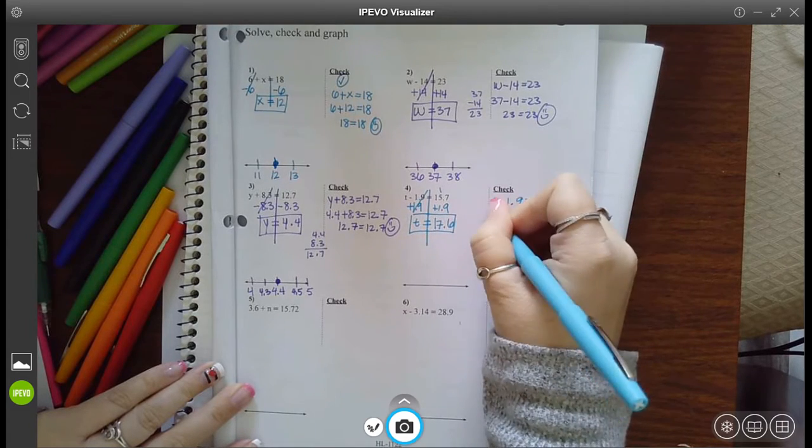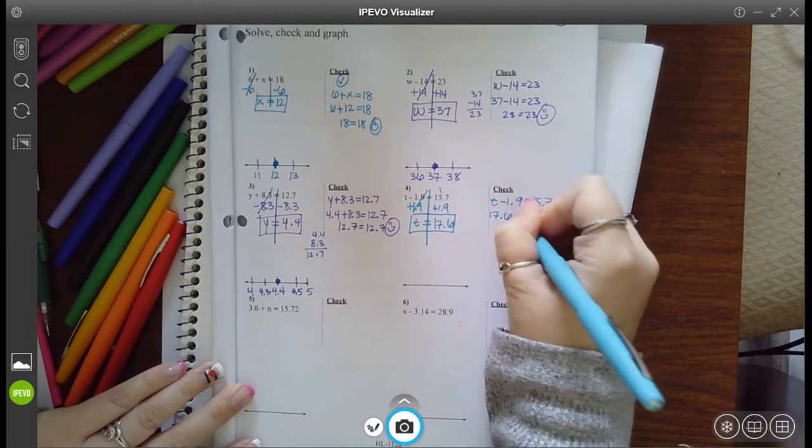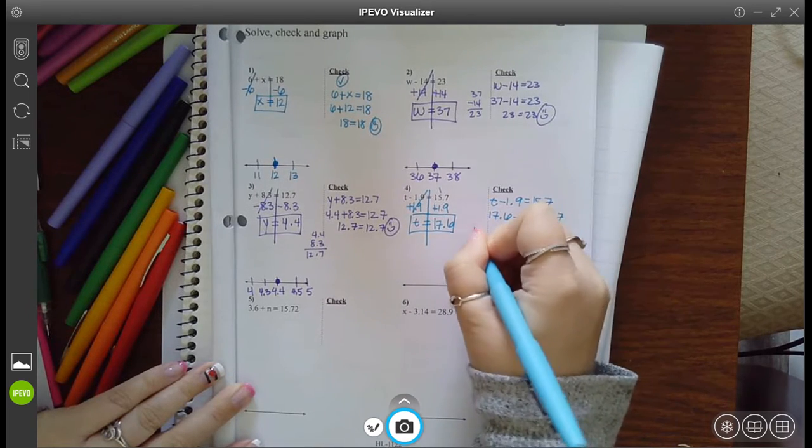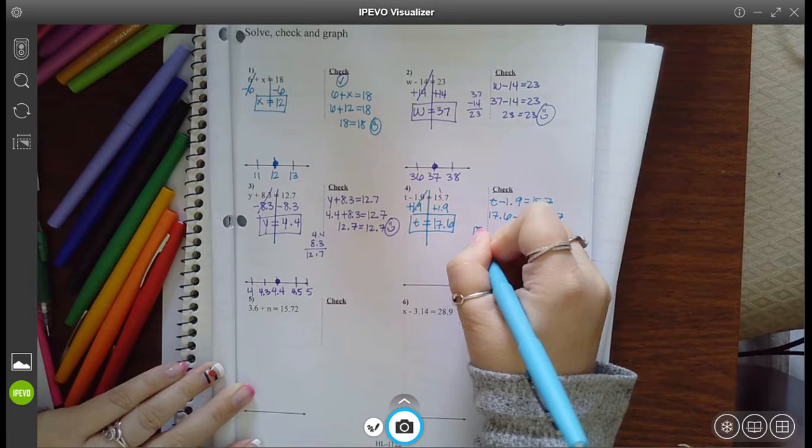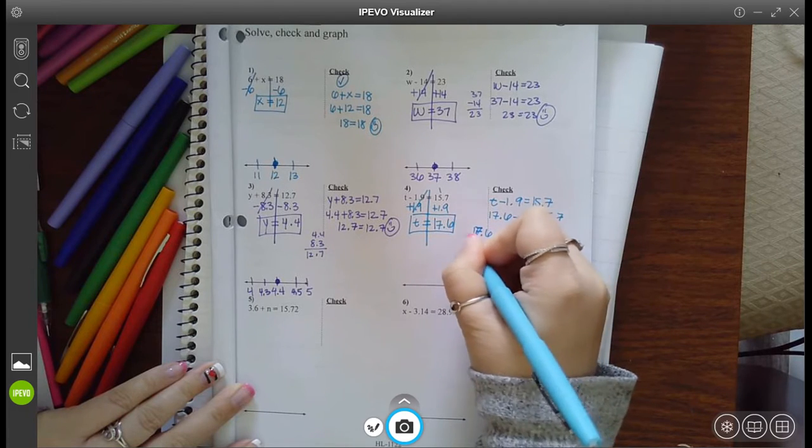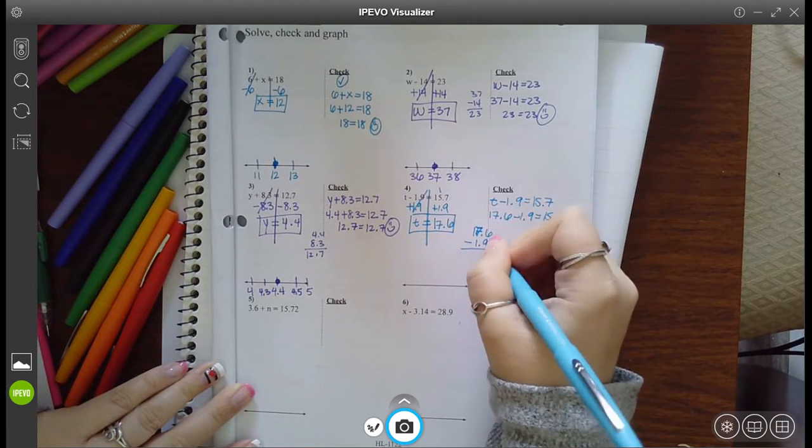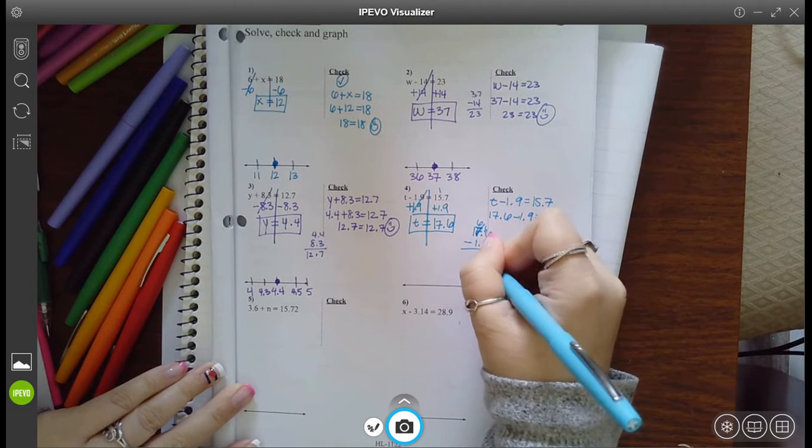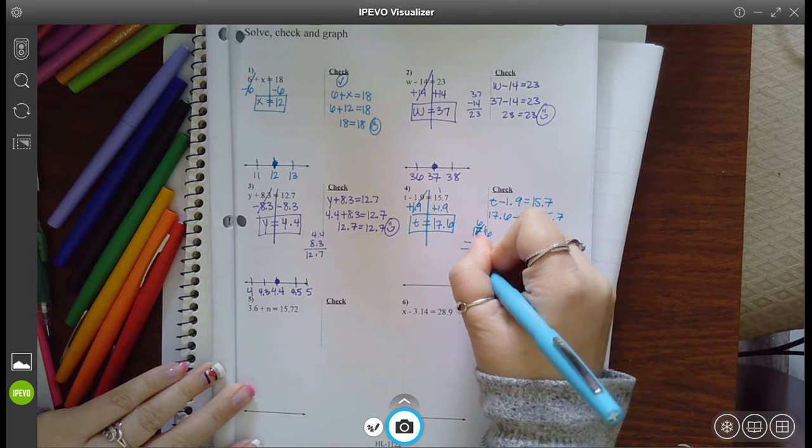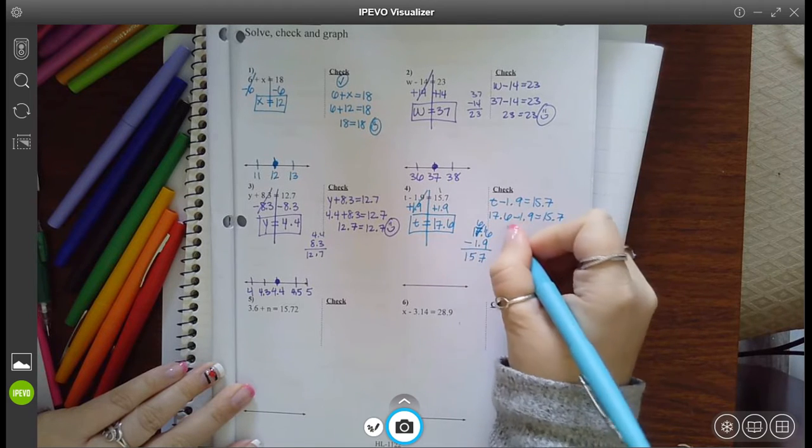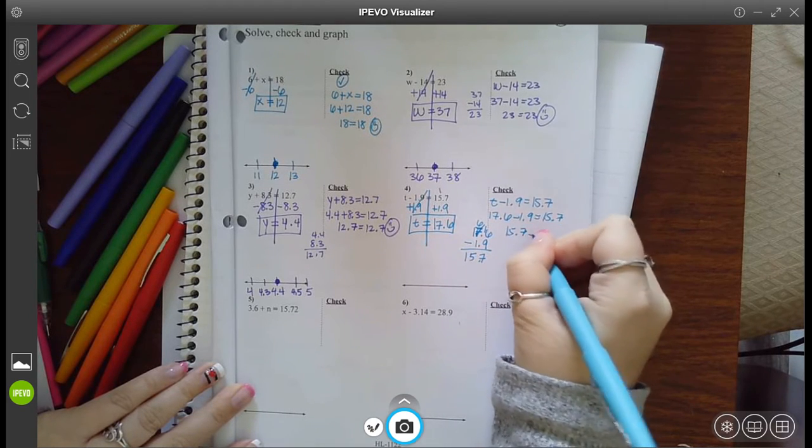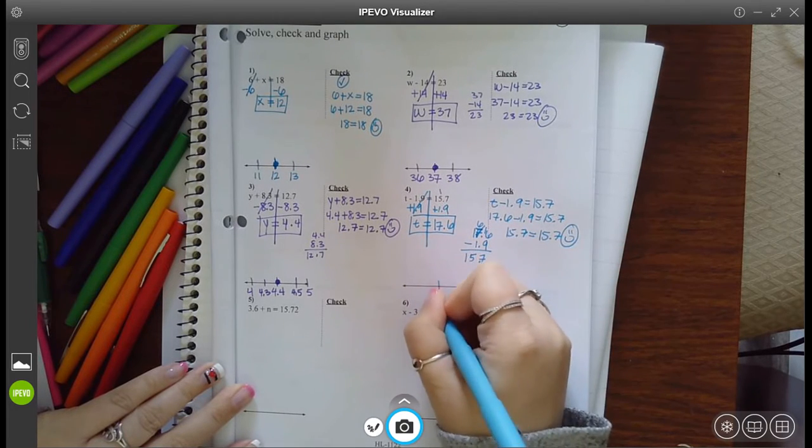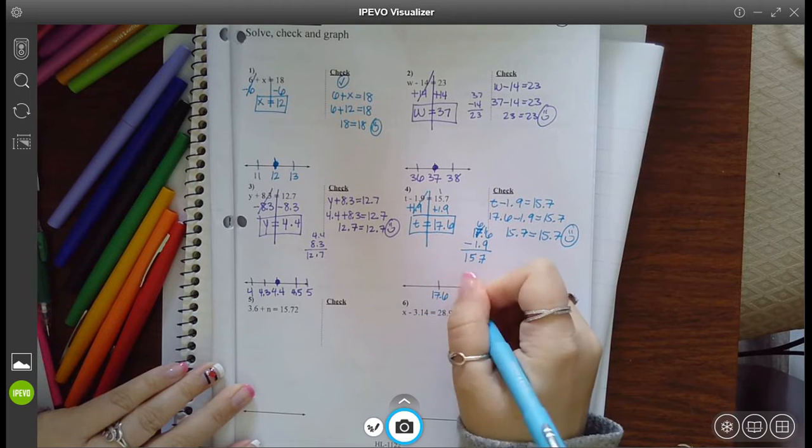I'm going to replace t with what I think it's equal to. And let's double check this. So 17.6 minus 1.9. Well, I can't take 9 from 6, so borrow. 16 minus 9 is 7. 6 minus 1 is 5. Bring down that 1 and you get 15.7, which is equal to 15.7. So true statement, which means 17.6 was indeed the correct answer.